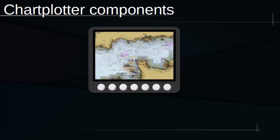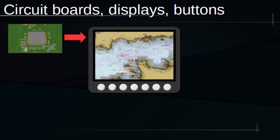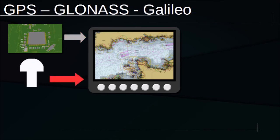To start with, it will be helpful to have a quick summary of the components that constitute a generic chart plotter. First, there is the hardware: enclosures, LCD displays, buttons, and circuit boards with their microcontrollers or microprocessors. Satellite position fixing may be included in the hardware or it may be from an external receiver, but fixes could be taken from dead reckoning and entered into the plotter manually.